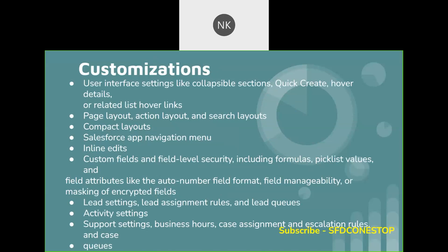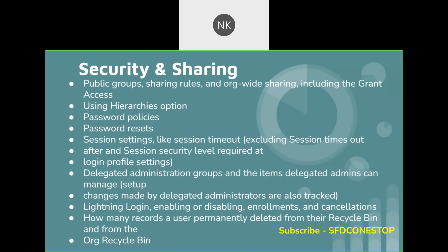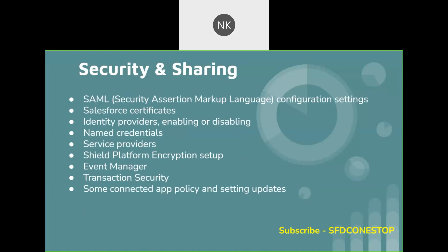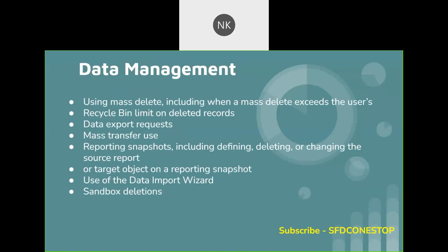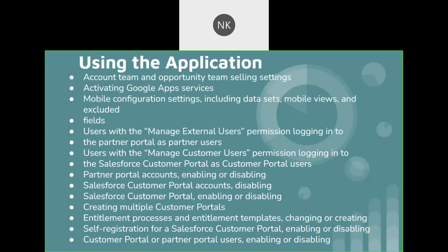Customization is another section where different components can be tracked, including validation rules, Chatter, email notifications, and field tracking. Under security and sharing, if you are making any changes to password policies or Lightning Login, those are various components you can track. Changes to SAML and Salesforce certificates, data management such as mass delete and mass transfer, and development changes such as creating or modifying Apex classes, triggers, Visualforce pages, and Lightning components can all be tracked in the audit trail.